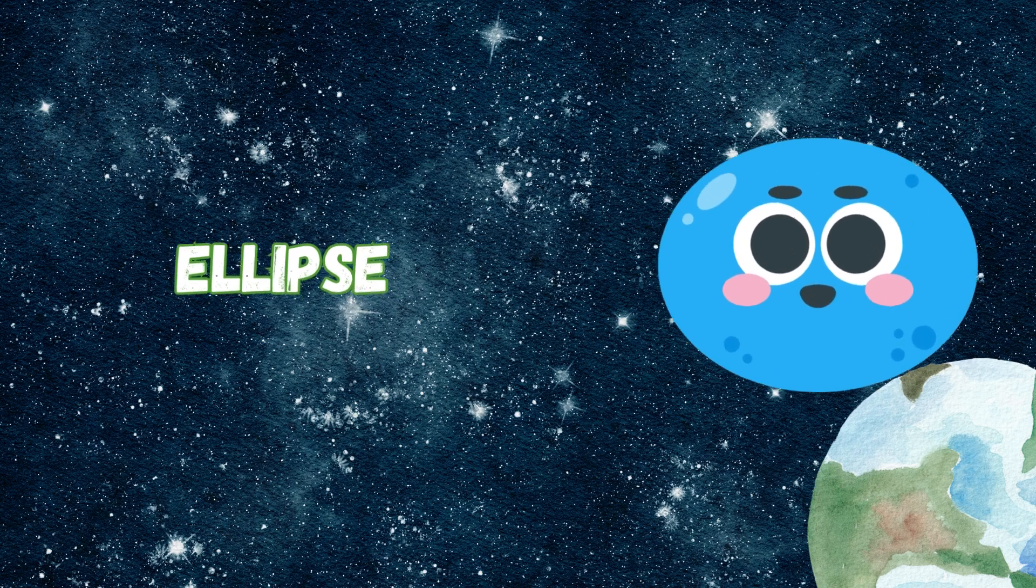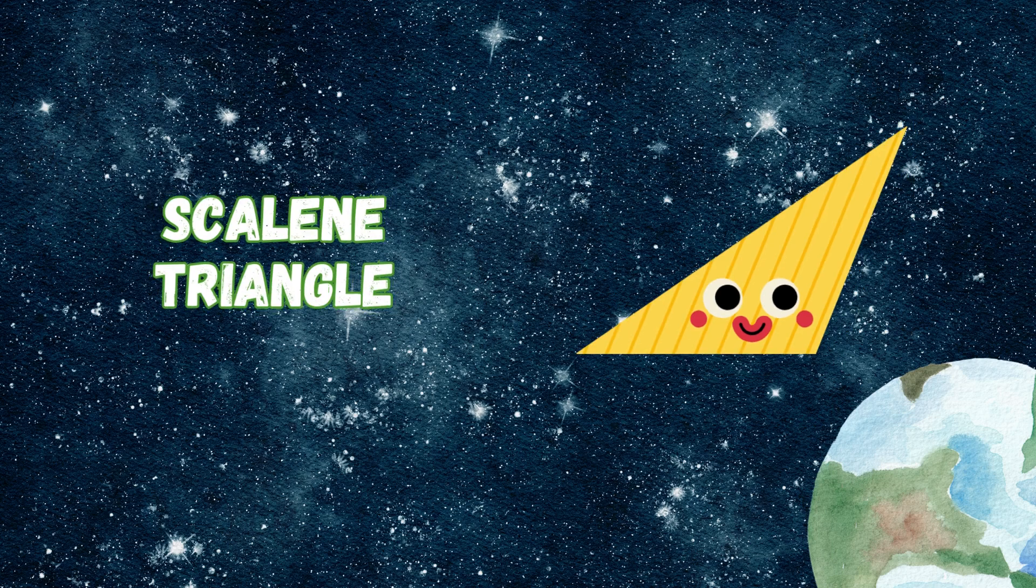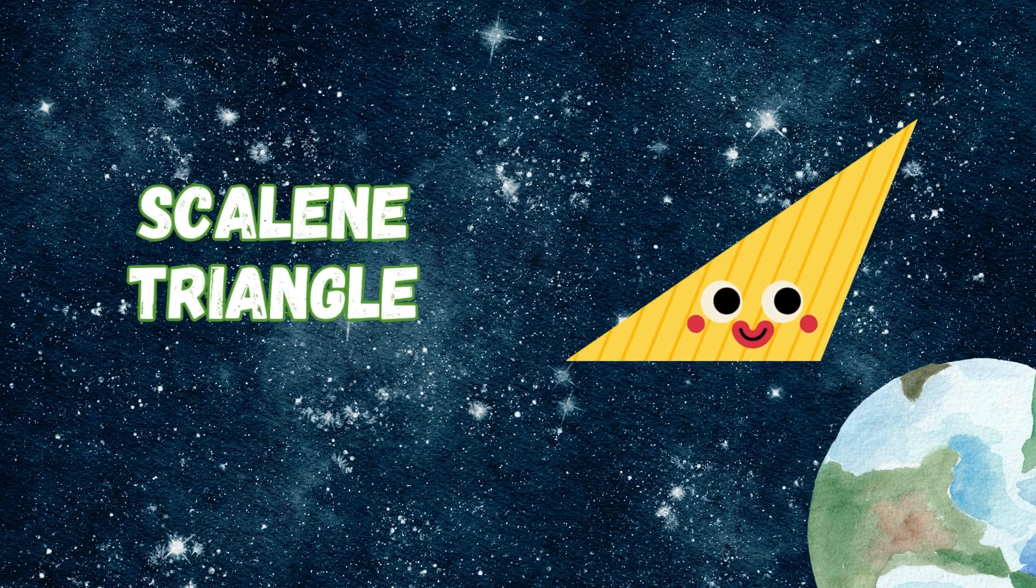Ellipse is stretched, long or wide, a lovely shape on every side. Scalene triangle sides don't match, different angles, no strings to catch.